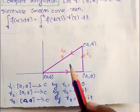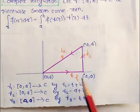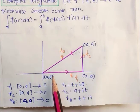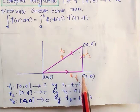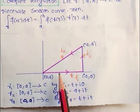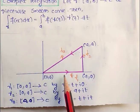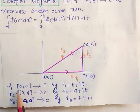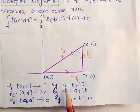Next we find the parametric equations of gamma 1, gamma 2, and gamma 3. For gamma 1: this is the line y = 0, where only x is varying. So the parametric equation of gamma 1 is: gamma 1 maps the closed interval [0, a] to z, by gamma 1(t) = t + i·0.